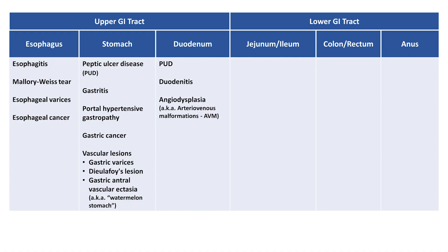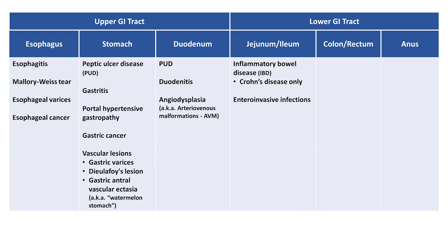Moving to the lower GI tract, in the jejunum and ileum, bleeding can be from inflammatory bowel disease — but only Crohn's disease is found there. It can also be from enteroinvasive infections, such as some strains of E. coli, and angiodysplasia again.